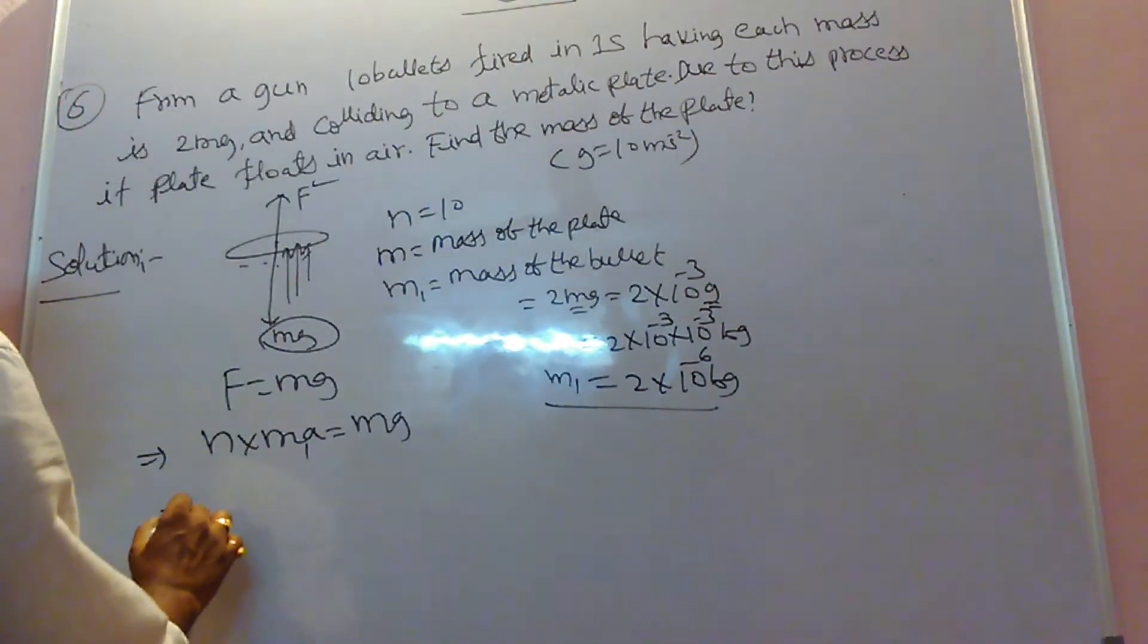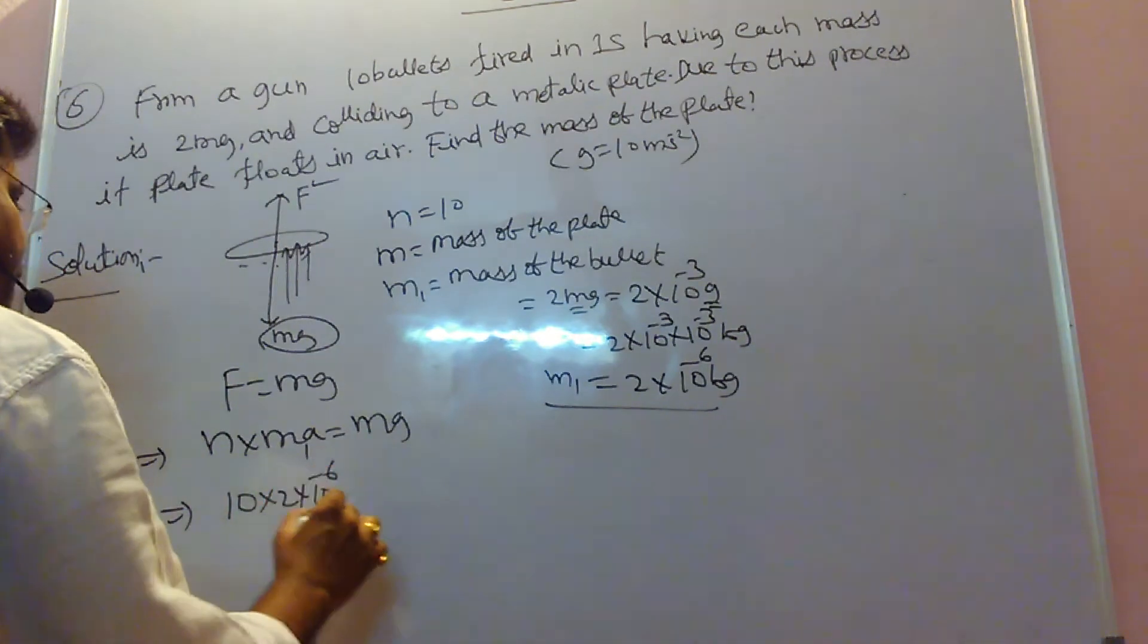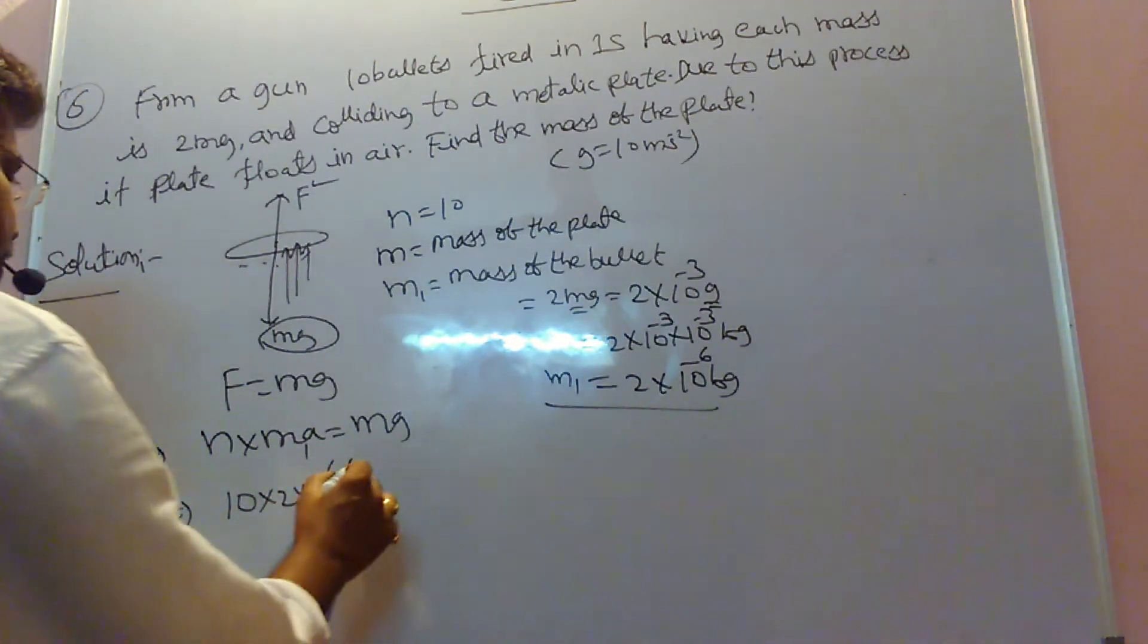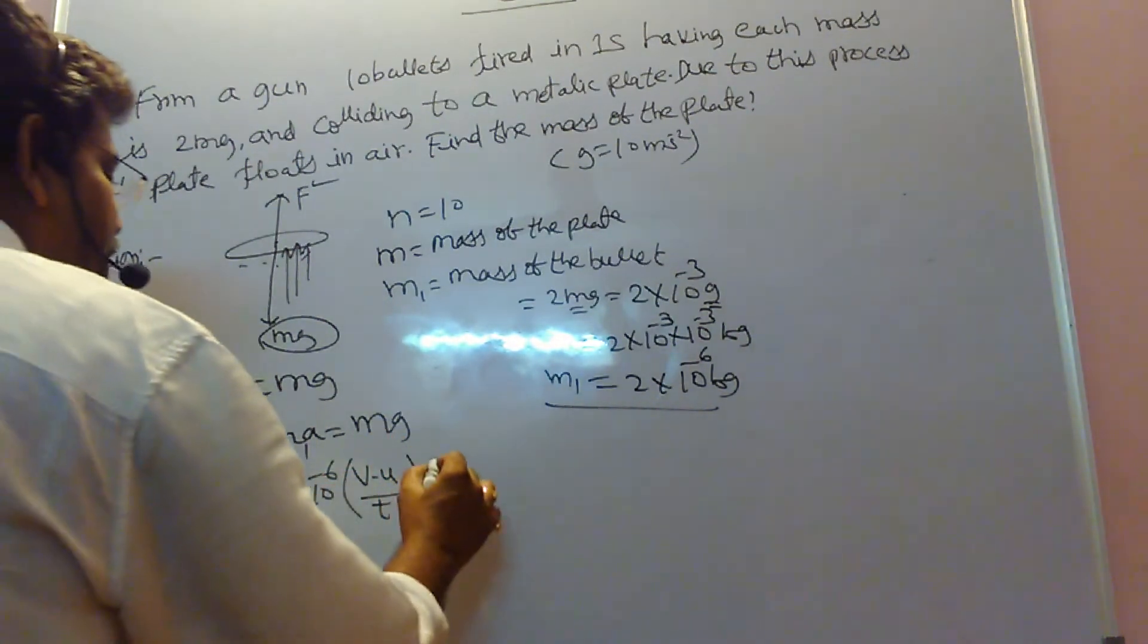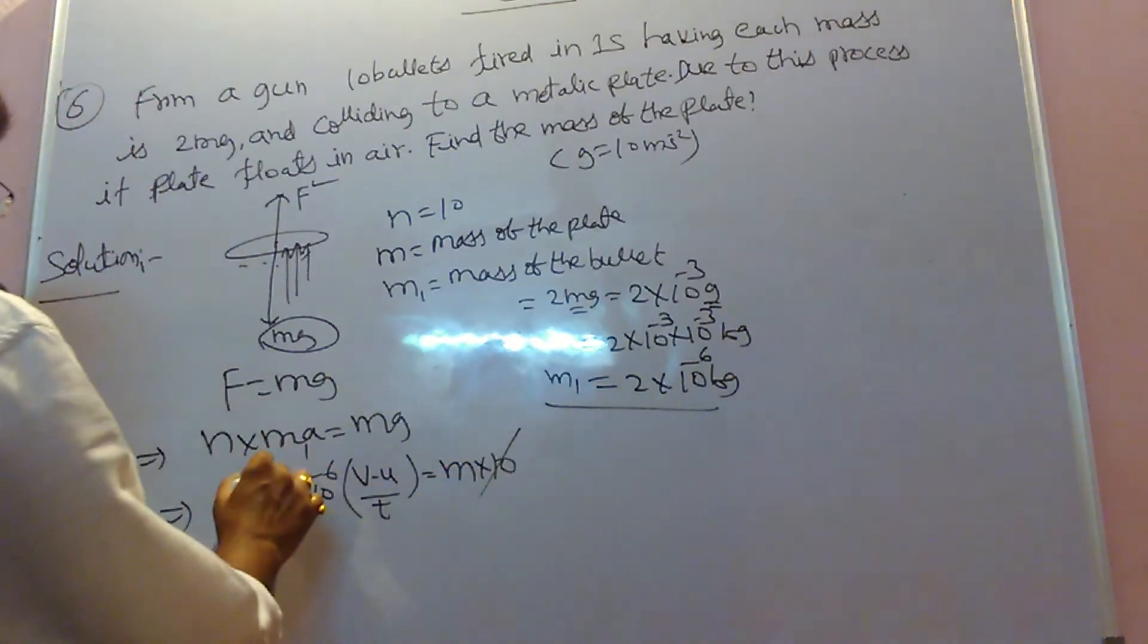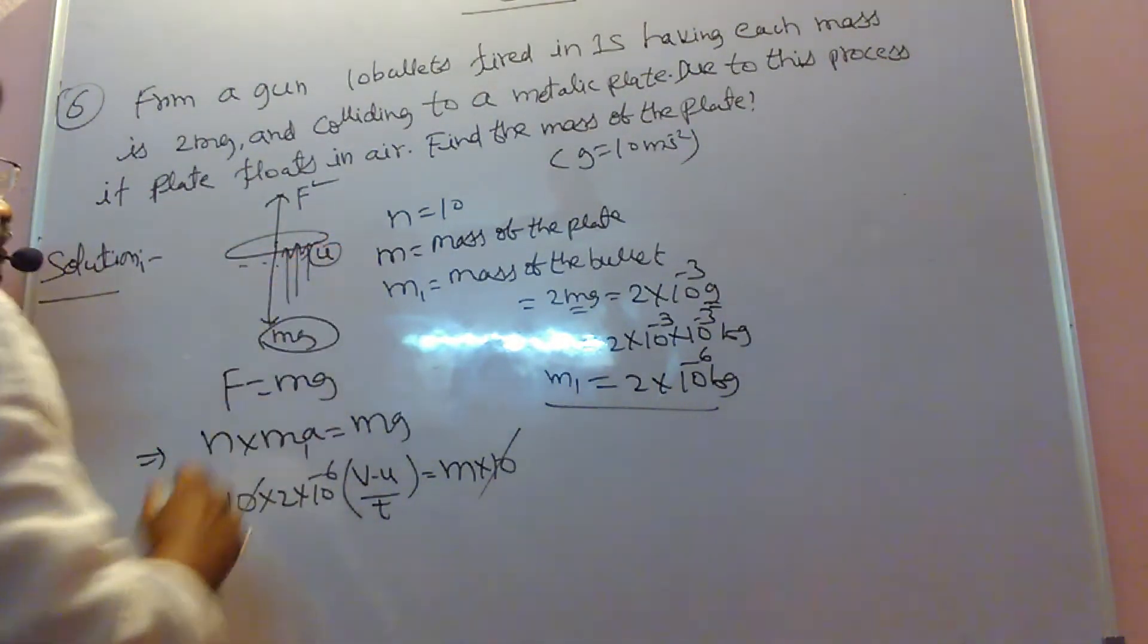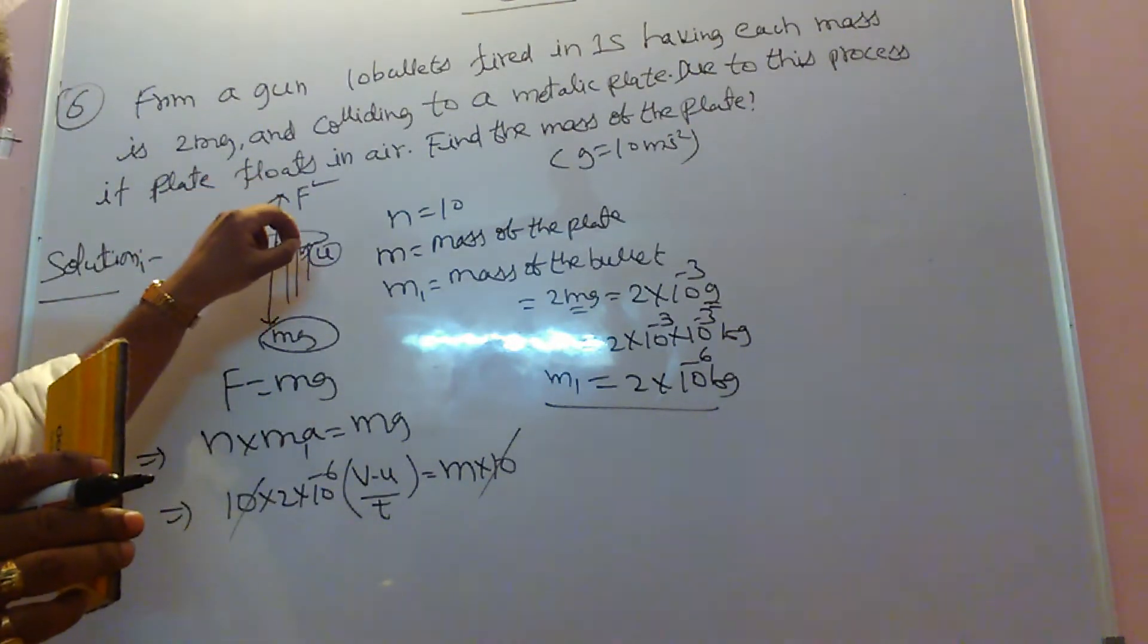Now substitute. What about N? Number of bullets is 10. What is the mass of the bullet? 2 into 10 power minus 6. What is the formula for acceleration? V minus U by T. V minus U by T equals mg. M is the mass of the plate. G value we take as 10. So 10, 10 cancel. What about final velocity? It is colliding with some U initial velocity. I am taking bullet colliding to plate condition, not bullet leaving gun condition.